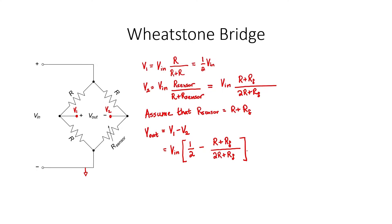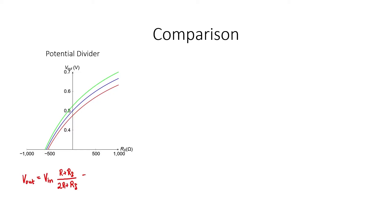Any noise present in the input voltage is going to be canceled out when the Wheatstone Bridge is balanced. To illustrate both of these properties, I'd like to graph the output voltage versus R_delta for both the potential divider and the Wheatstone Bridge. We'll assume that all resistors are 1-kiloohm resistors, and that our input voltage is set to 1 volt. We're plotting the output voltage versus R_delta.